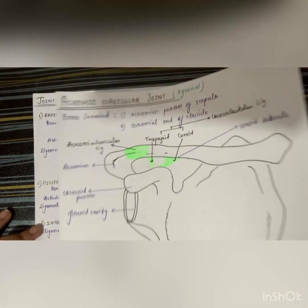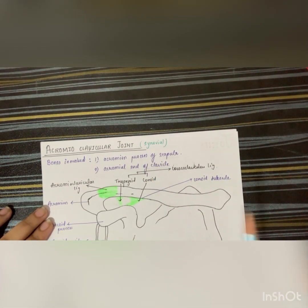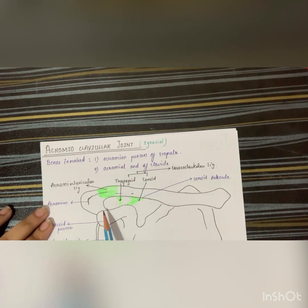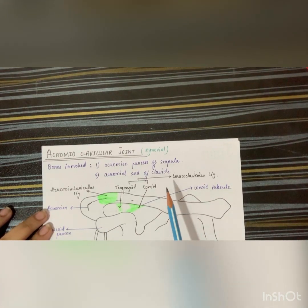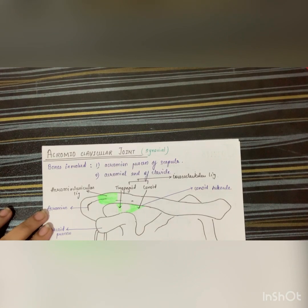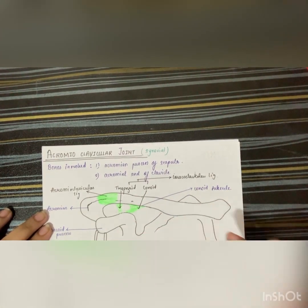Coming to the next joint, the acromioclavicular joint: it is a synovial joint. The bones involved are the acromial process of the scapula and the acromial end of the clavicle. The ligaments involved are the acromioclavicular ligament and the coracoclavicular ligament. Below the coracoclavicular ligament there is a synovial bursa, and the coracoclavicular ligament has two parts.